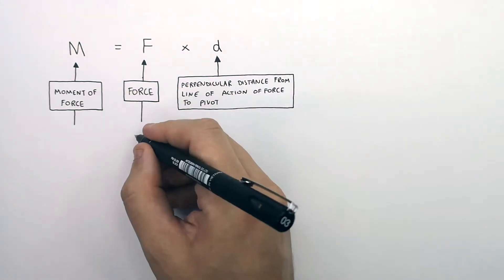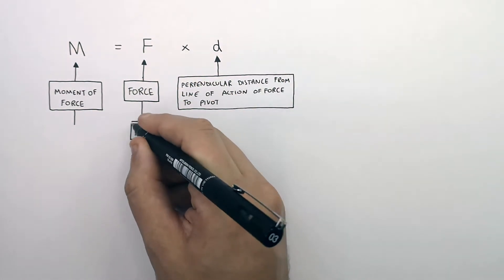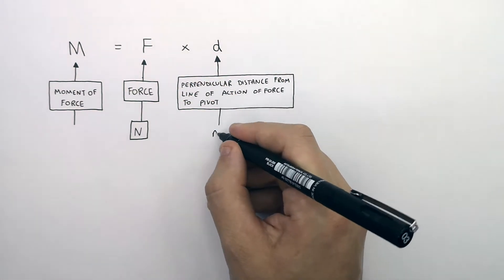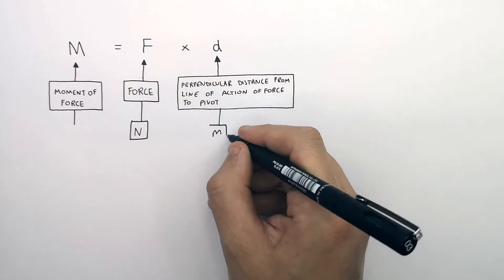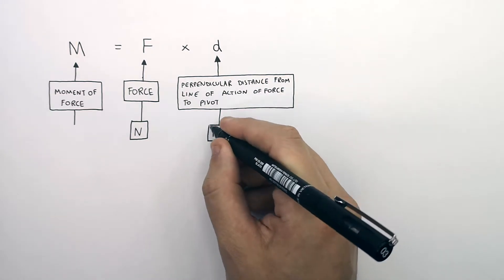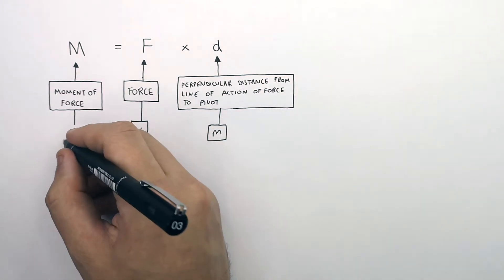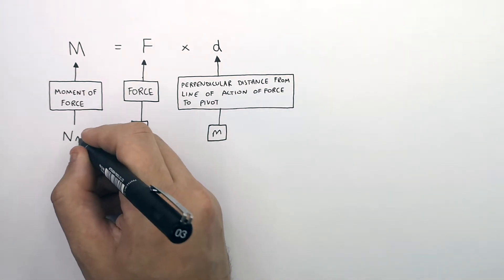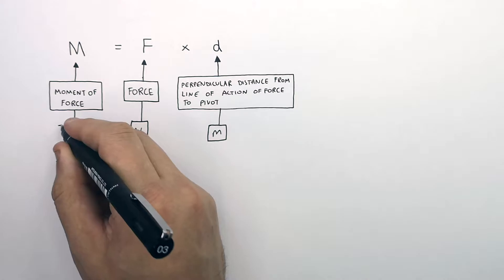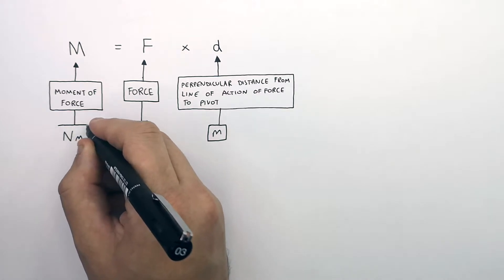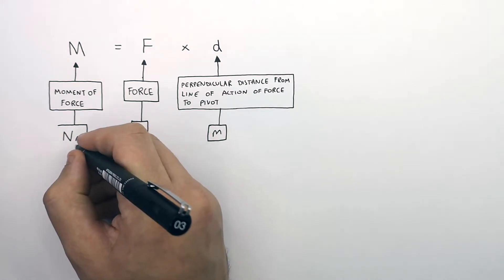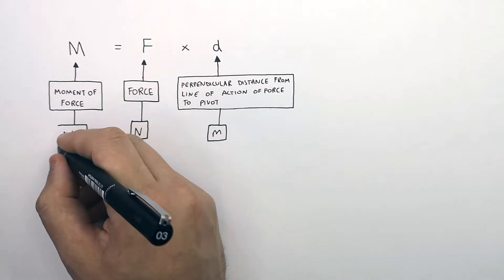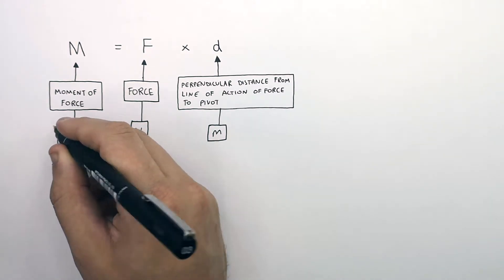The unit for force is Newtons (N). The unit for distance D is meters (m). And because you're multiplying the number of Newtons by the number of meters, the unit for the moment is Newton meters.